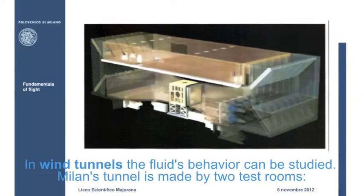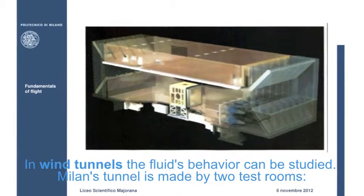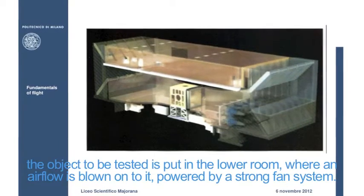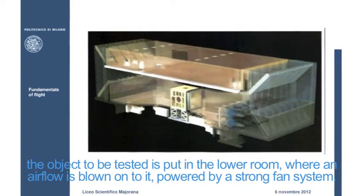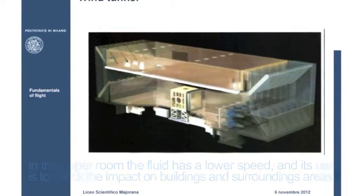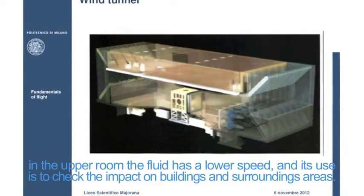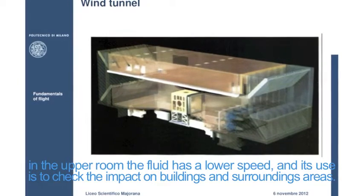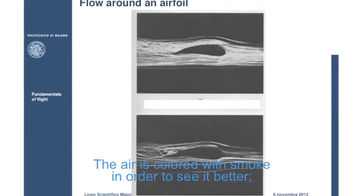In the wind tunnels, the fluid's behavior can be studied. Milan's tunnel is made by two test rooms. The object to be tested is put in the lower room, where an air flow is blown onto it, powered by a strong fan system. In the upper room, the fluid has a lower speed, and its use is to check the impact on buildings and surrounding areas.